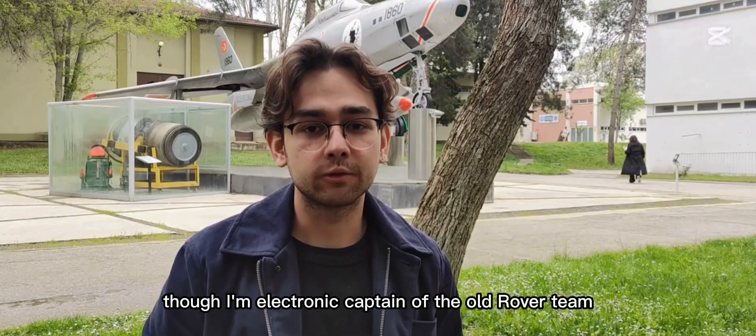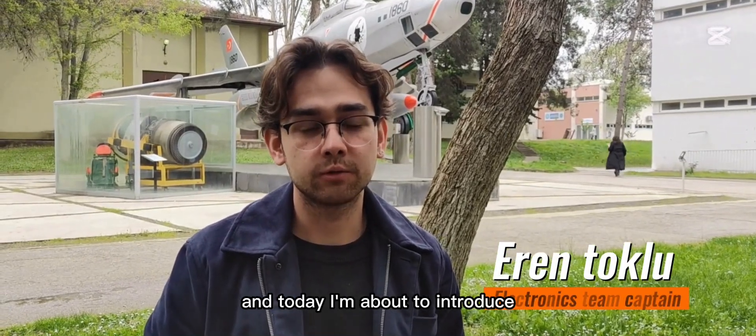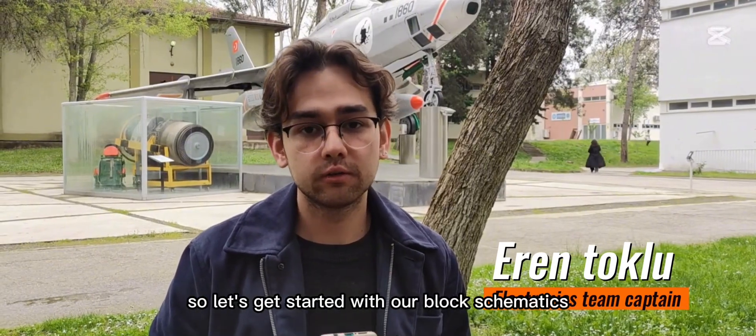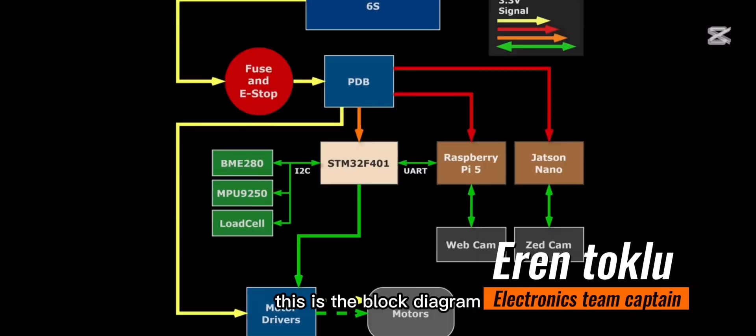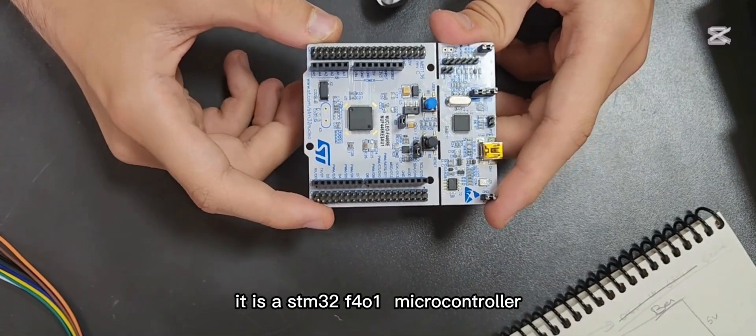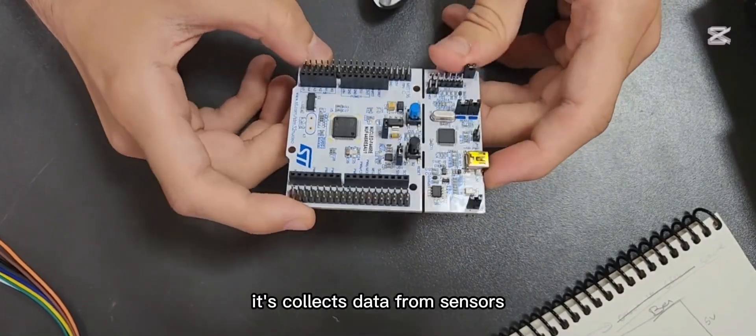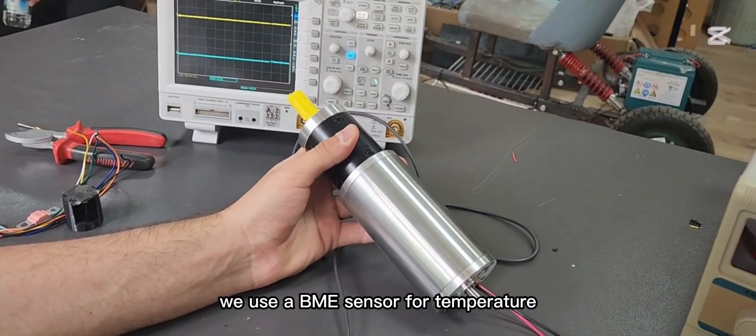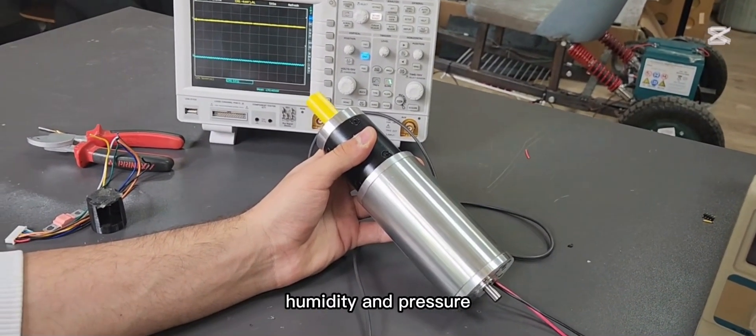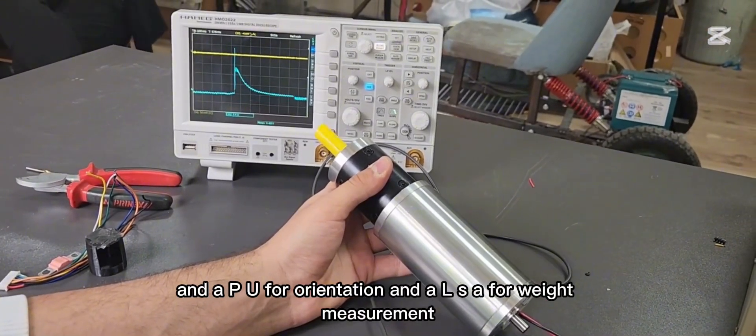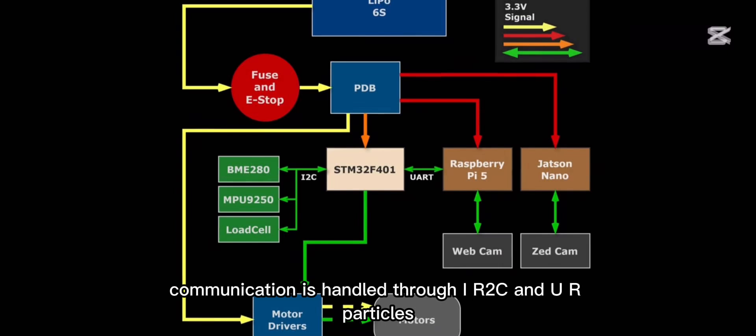Hello, I am electronic captain of the ULU Rover team. And today I am going to introduce you our electronic system part by part. So let's get started with our block schematics. This is the block diagram of ULU Rover. The central controller is a STM32F401 microcontroller. It collects data from sensors and sends commands to other units. We use a BME sensor for temperature, humidity and pressure, and MPU for orientation, and a load cell for weight measurement. Communication is handled through I2C and UART protocols.